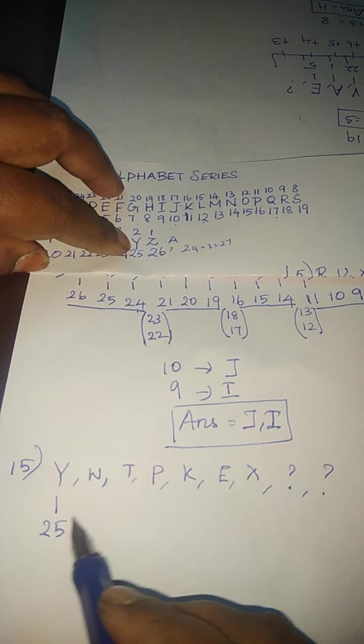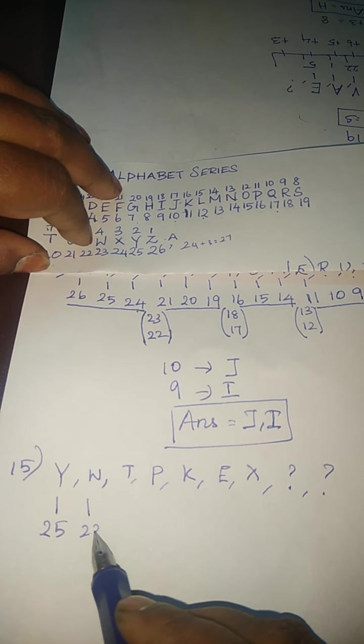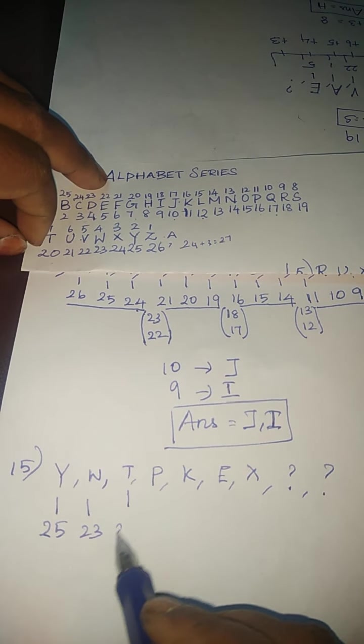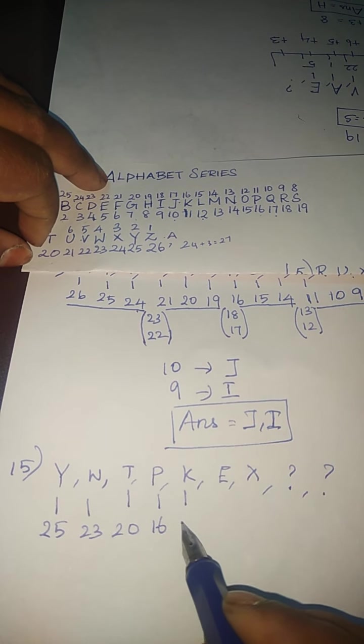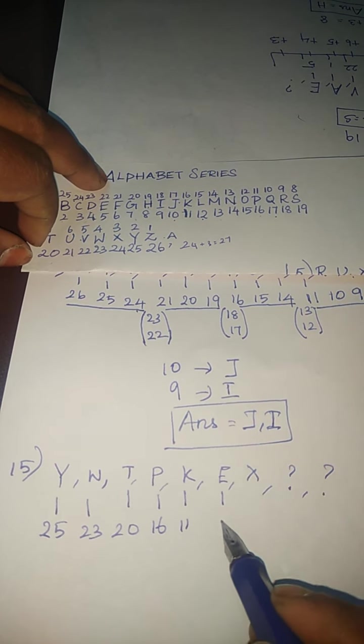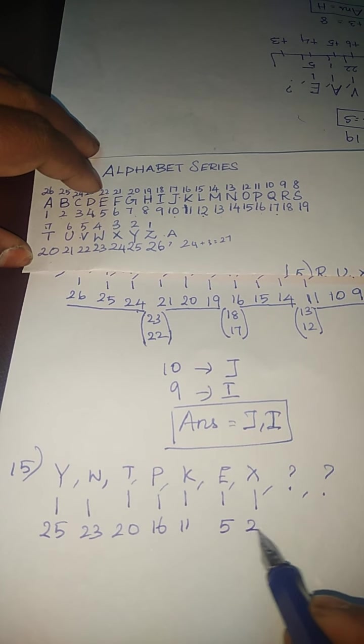We have to just write the numbers which denotes alphabet series. Y is 25, W is 23, T is 20, P is 16, K is 11, E is 5, X is 24.